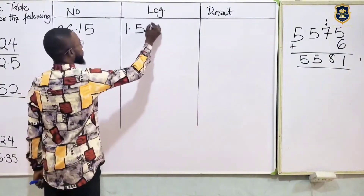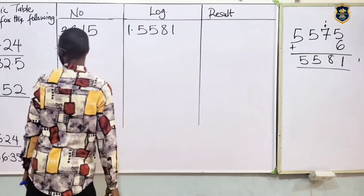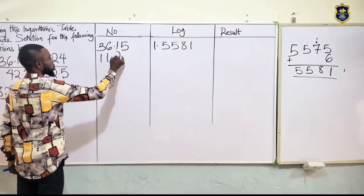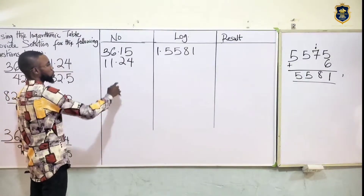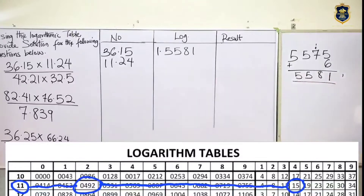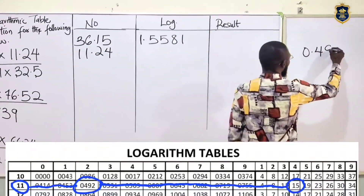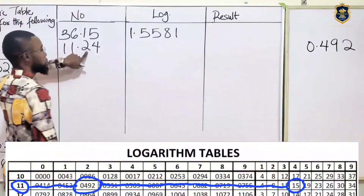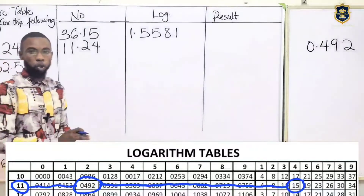So the mantissa is 5581. I'll put in 5581 — that's the first one. Now for the second one it is 11.24. Look for the logarithm of 11 on that 2. If you check your log table, you'll see that log of 11 should be — we discover it is 0492.